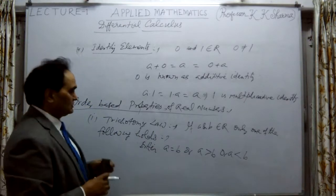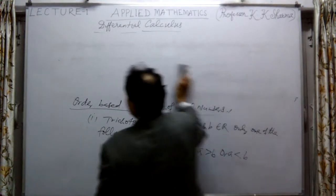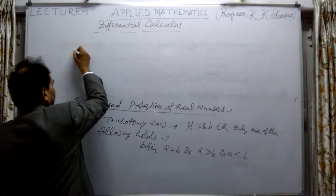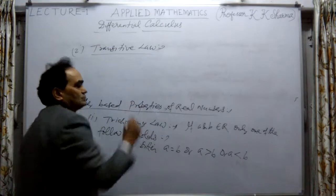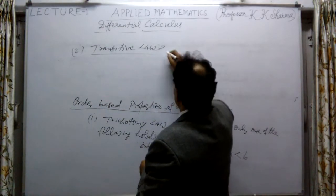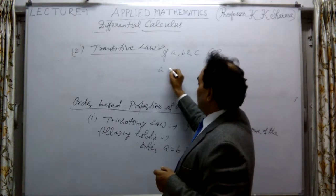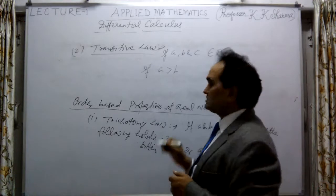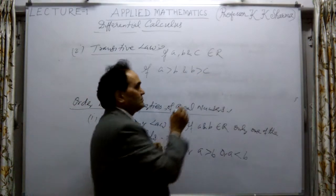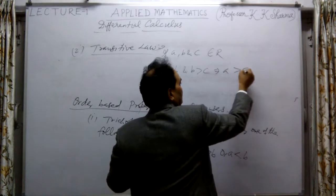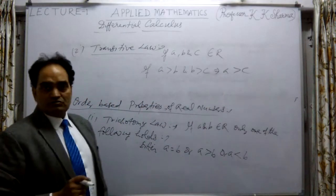The next is the transitive property. If A, B, and C belong to R, and if A > B and B > C, then this implies that A > C. This is the transitive law, applied on three quantities.